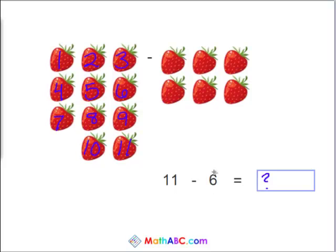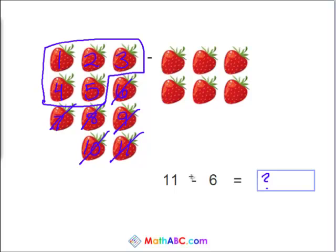And now let's cross off 6 of them. 1, 2, 3, 4, 5, 6. How many strawberries do we have left? Yes. 5. 11 minus 6 equals 5.